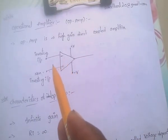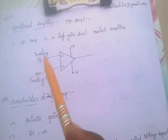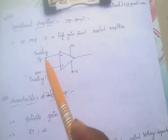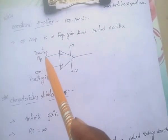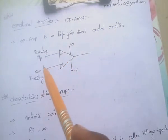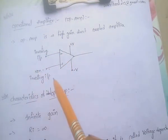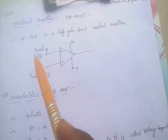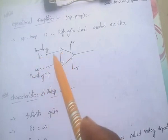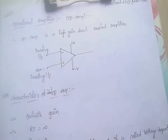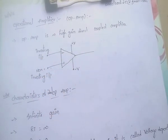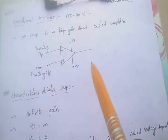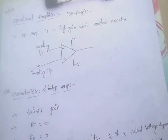It has two input terminals. The first one is the inverting input and the second one is the non-inverting input. This is the symbol of op-amp.